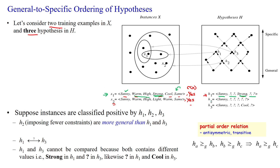Now training sample X2 must be checked with hypothesis H1. The first value is sunny — here also it is sunny. Then two quotient symbols in H1 will accept any value, so that is not a problem. But here H1 has strong, while in the second example it is light. So H1 cannot satisfy training example X2; it is not consistent with respect to training sample X2.